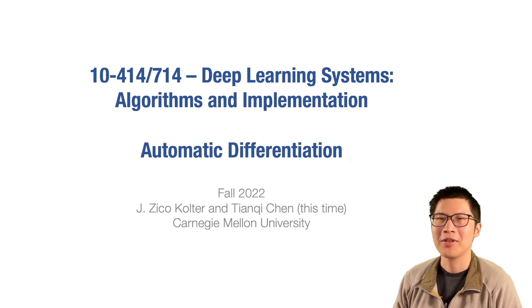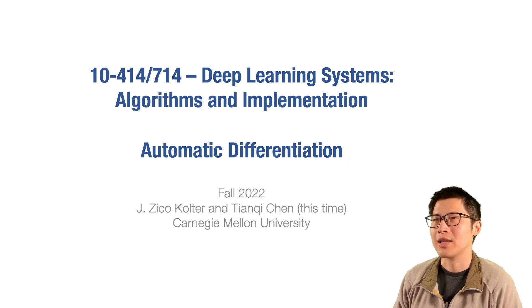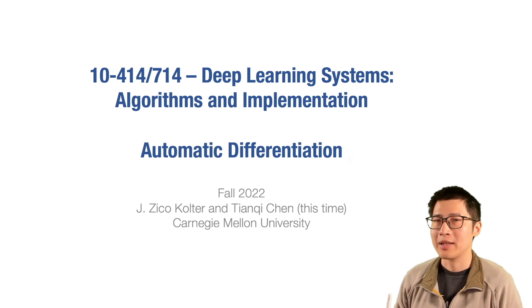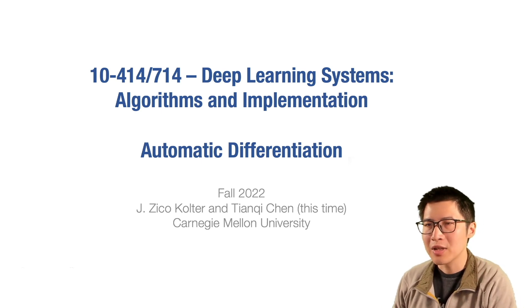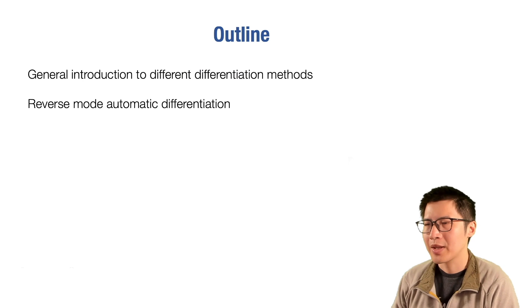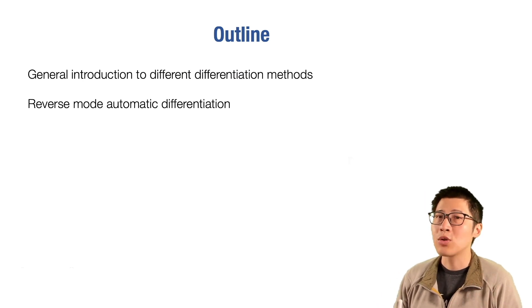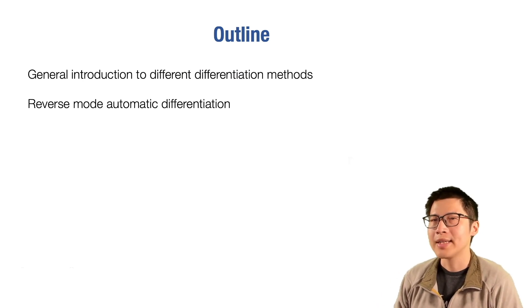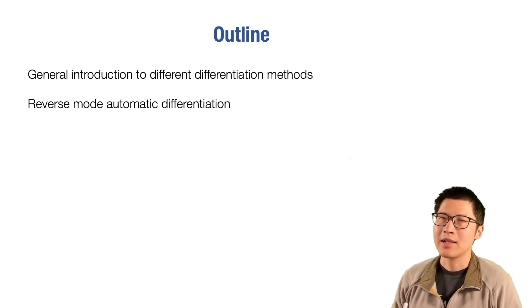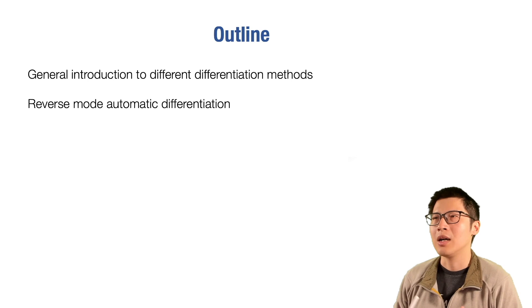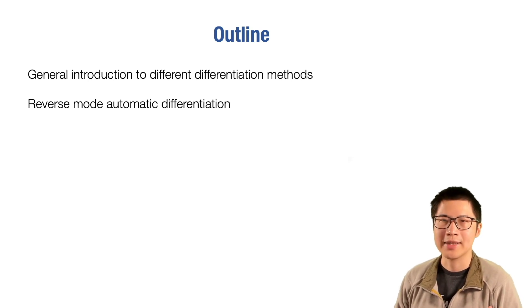Today we're going to cover a very important part of our entire lecture sequence. We're going to tell you a bit about how we do automatic differentiation. First, let's recap why we need automatic differentiation and the different differentiation methods. Then the second part of the lecture will cover the main method called reverse mode automatic differentiation, which is used in modern deep learning frameworks.